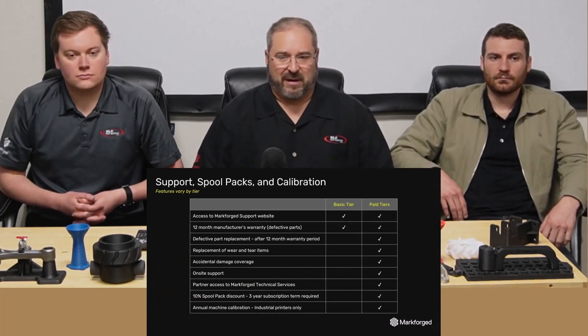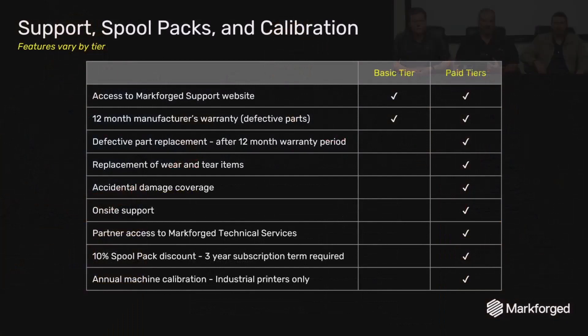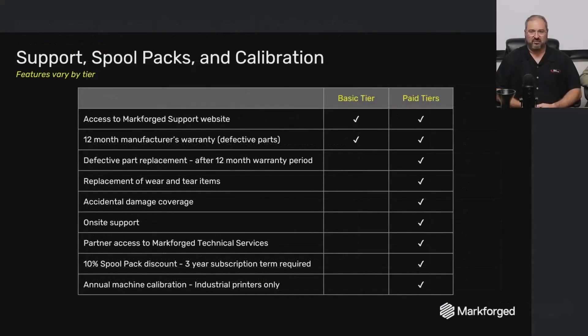Let's talk about features comparing Basic to the paid tiers. The Basic tier is your free tier — what you get when you buy a machine — and it includes access to the support website and a 12-month manufacturer's warranty. With all the paid tiers, you're getting replacement wear and tear items covered: bowden tubes, nozzles, the things you wouldn't traditionally think get replaced — those are covered under your paid tier warranty.